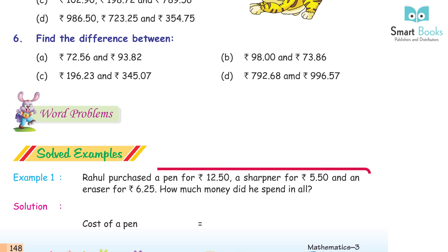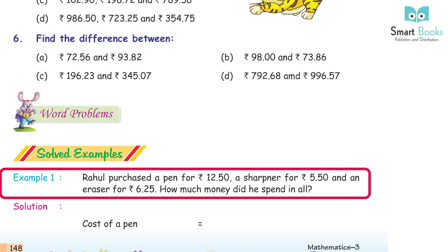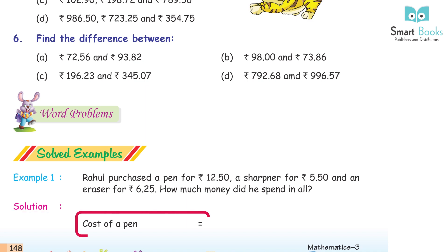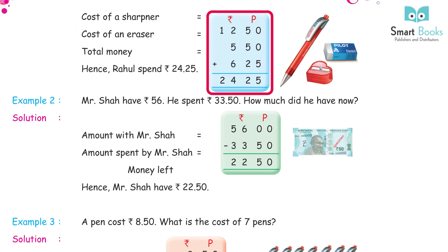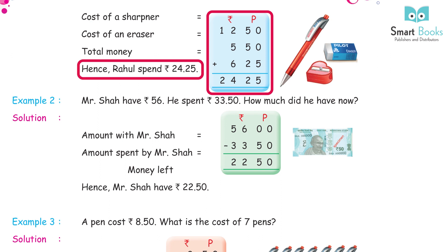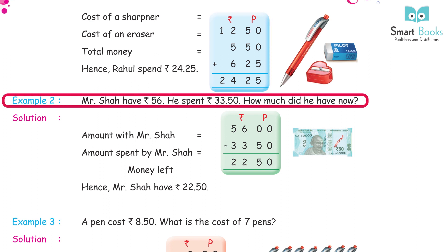Word problems — solved examples. Example 1: Rahul purchased a pen for Rs. 12.50, a sharpener for Rs. 5.50, and an eraser for Rs. 6.25. How much money did he spend in all? Cost of pen: Rs. 12.50, sharpener: Rs. 5.50, eraser: Rs. 6.25. Total money spent = Rs. 24.25.